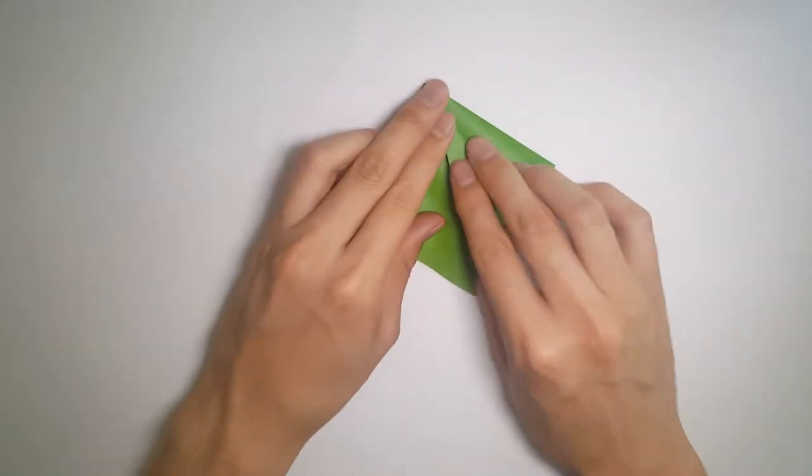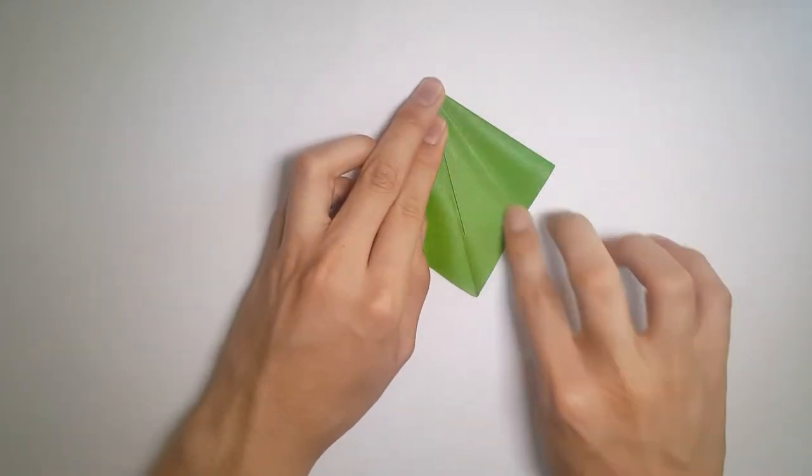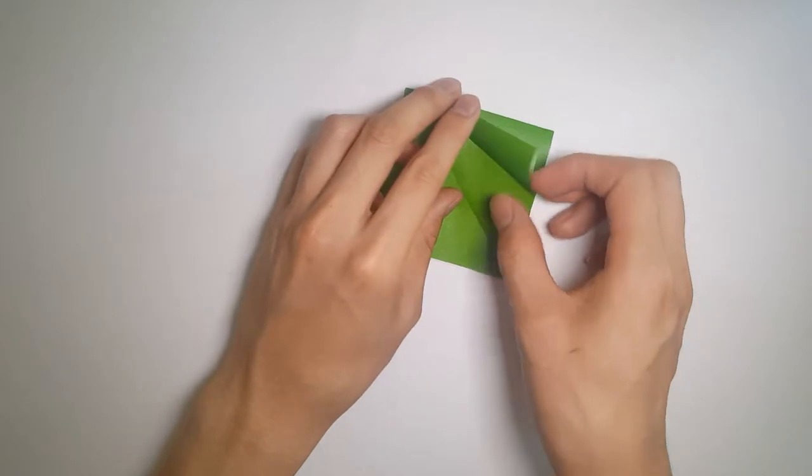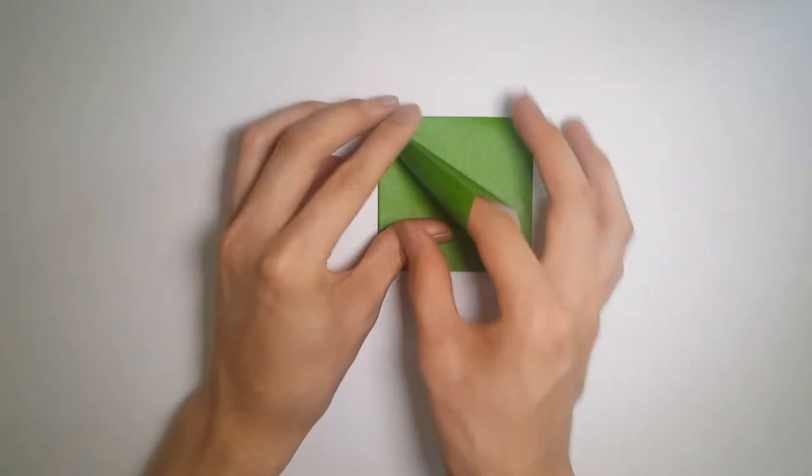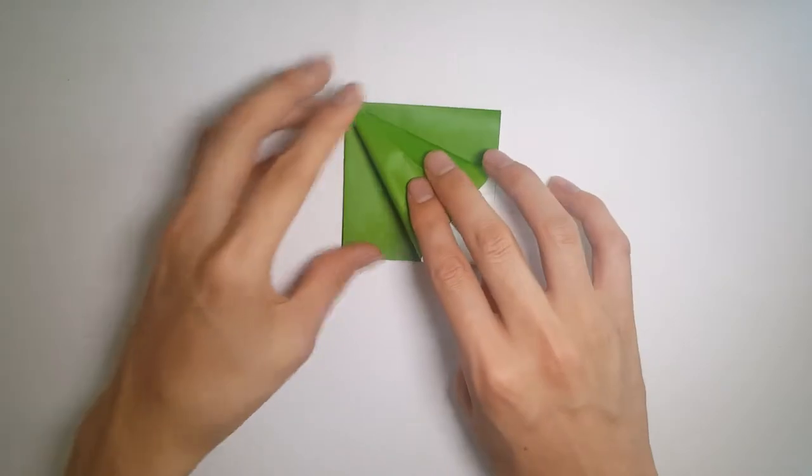Now let the right side meet the middle crease and fold it diagonally, like so. And now we just want to open up that layer and follow the crease as made, and fold.